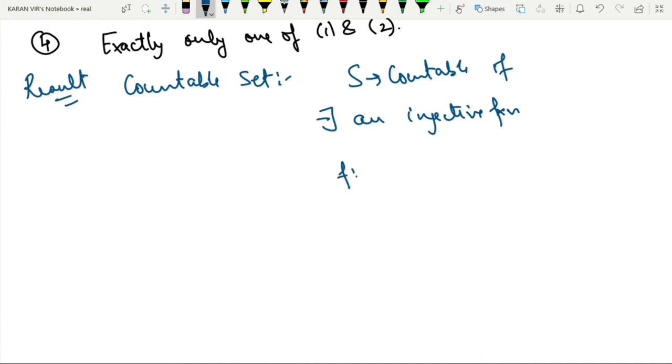And any set S is countably infinite if and only if it has one-to-one correspondence with the naturals. So these are the results which we will be using.